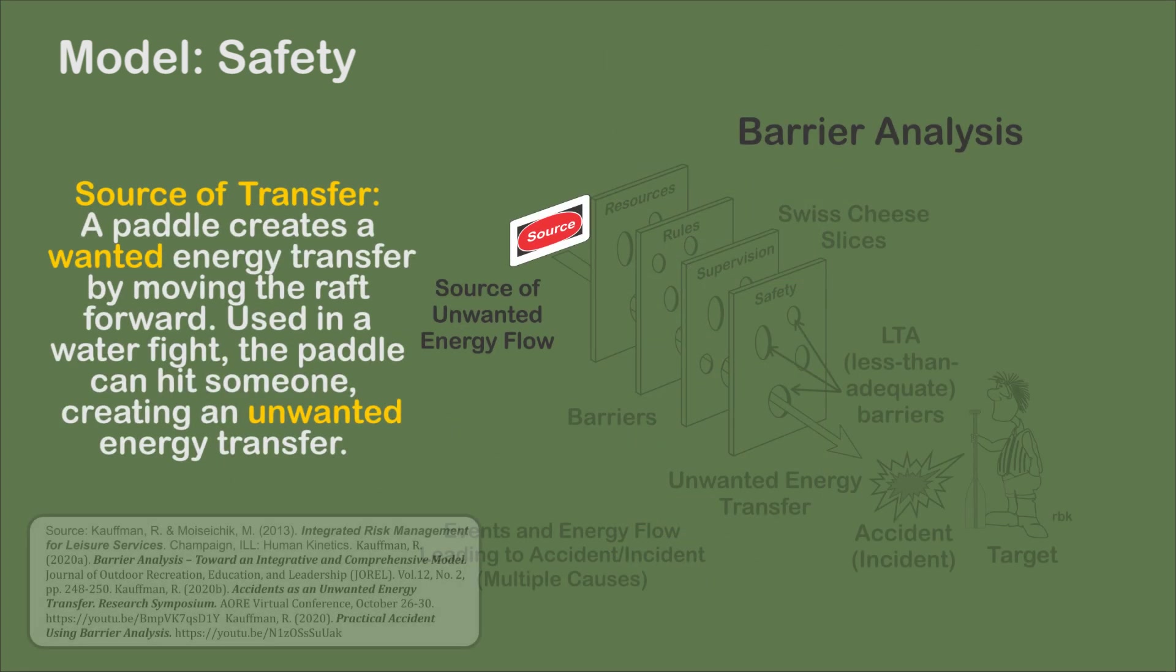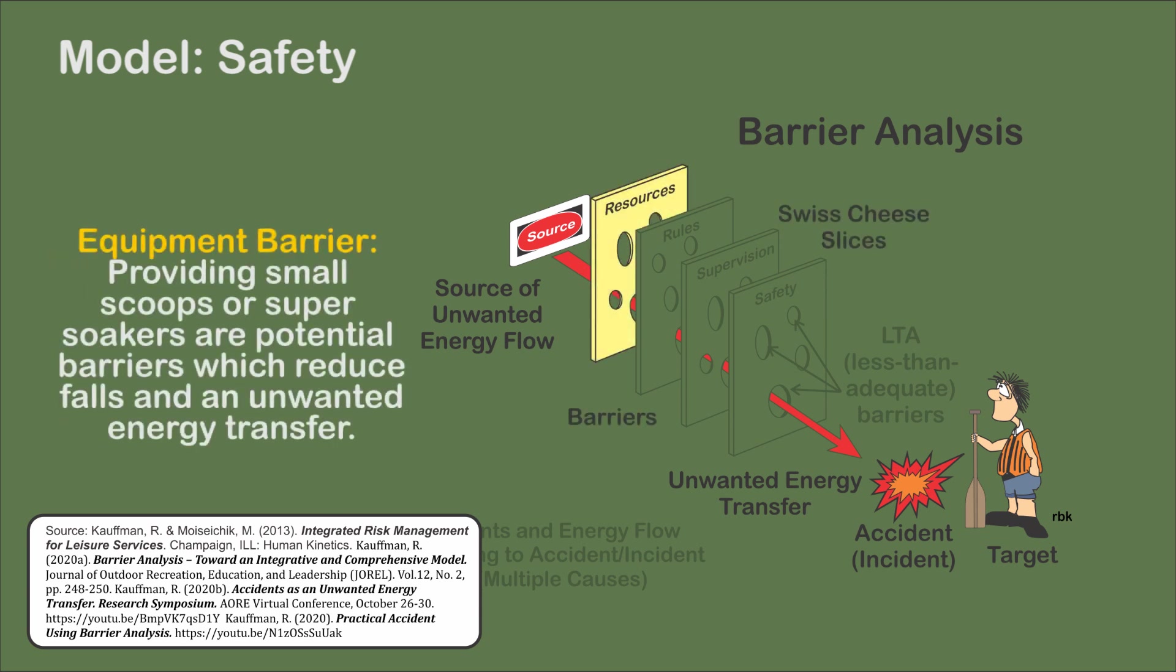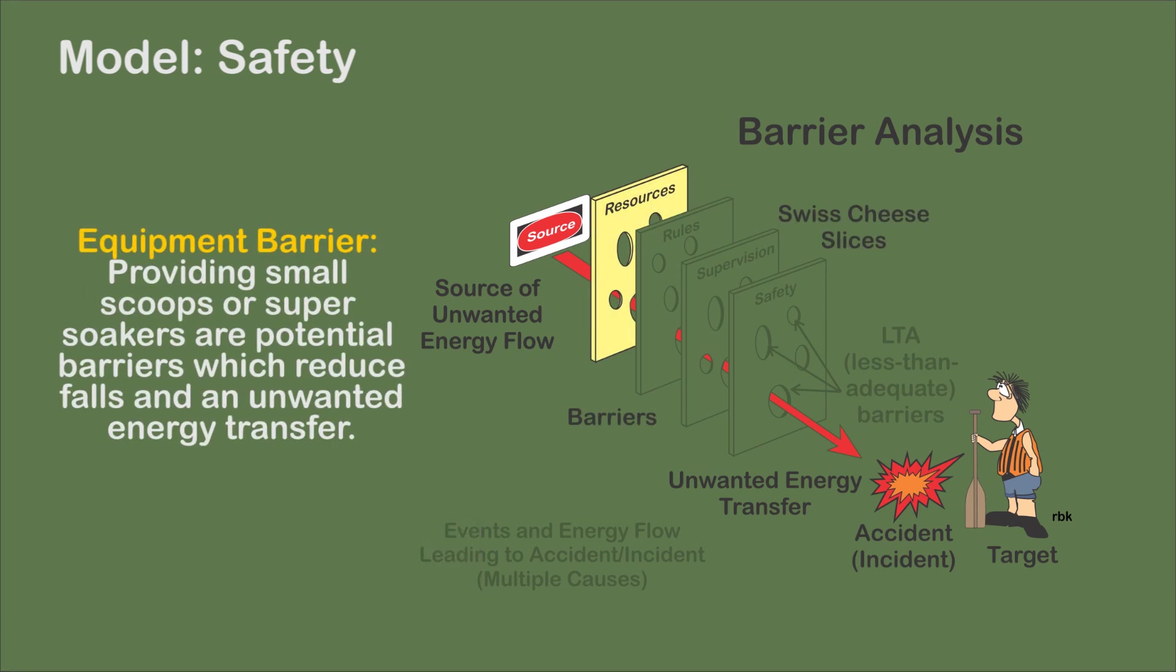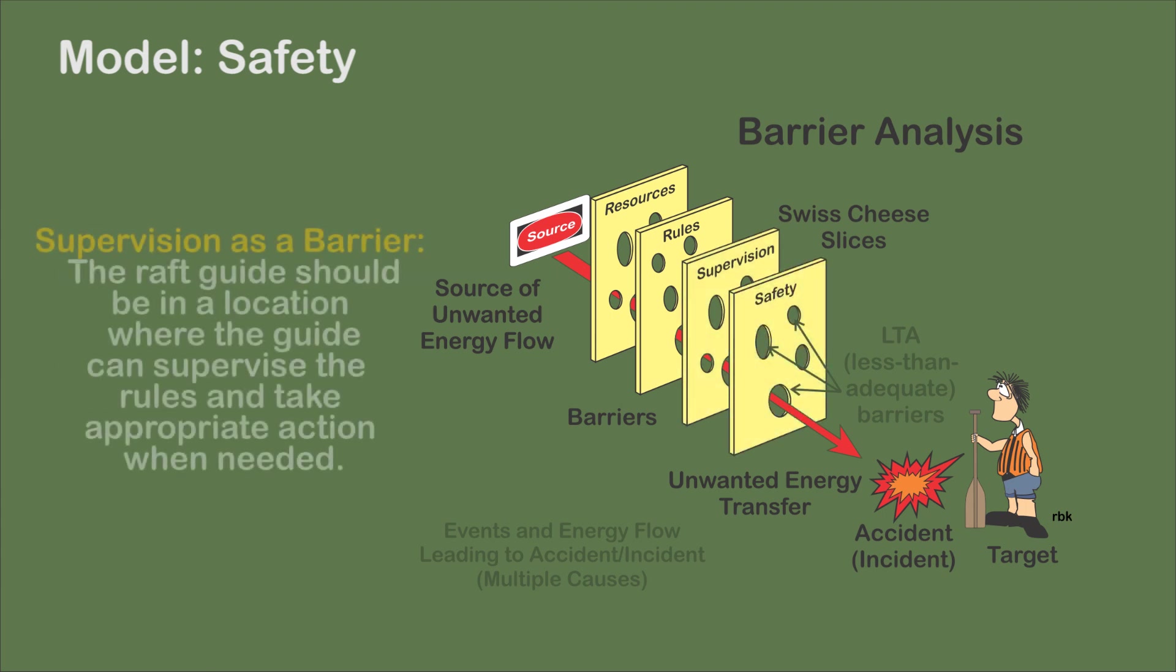Identify potential sources of unwanted energy flows and place administrative and physical barriers to reduce the unwanted energy flow from reaching the target. Proper resources, rules, and the leader's supervision are all barriers that reduce the likelihood of an unwanted energy transfer.